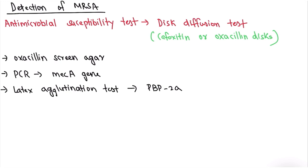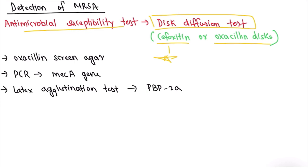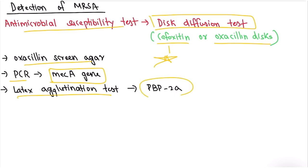MRSA detection methods: antimicrobial susceptibility testing by disc diffusion using cefoxitin disc (preferred) or oxacillin disc; oxacillin screen agar; PCR to detect the mecA gene; and latex agglutination test to detect PBP2a. This completes the Staph. aureus microbiology portion. Thank you for watching — please like and subscribe for more medical videos.